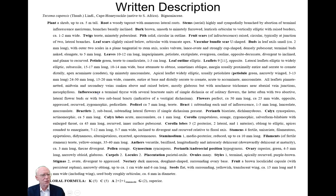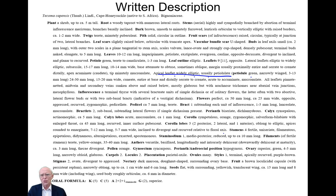Another way of doing identifications is to use written descriptions. Unfortunately, these take a lot of knowledge to read. For example: 'apical leaflet widely elliptic, usually petiolate, petiolule green, narrowly winged.' And more complex ones refer to 'corolla lobes inclined to divergent and recurved relative to floral axis.' By the end of the semester you will be able to read these descriptions reasonably well, but written descriptions are still not a great way to make identifications — they're very difficult to use.